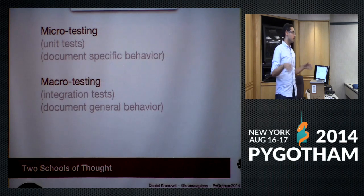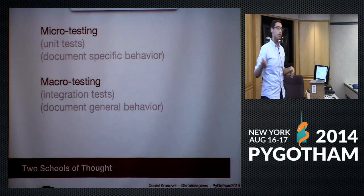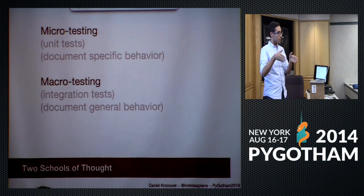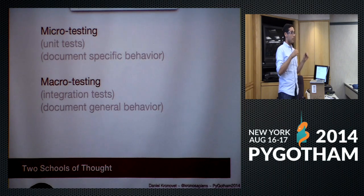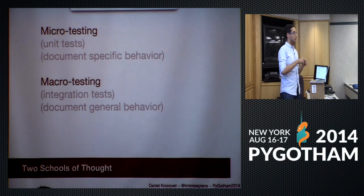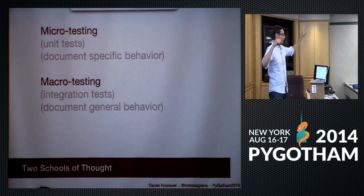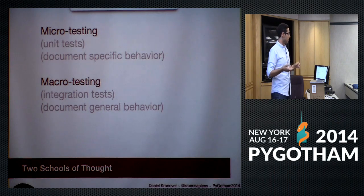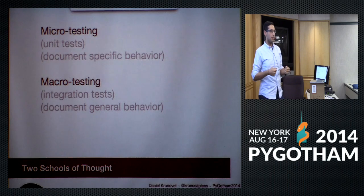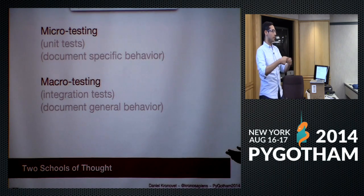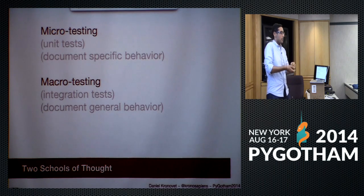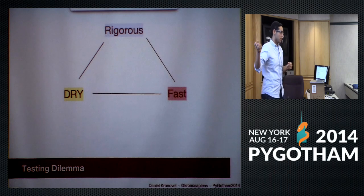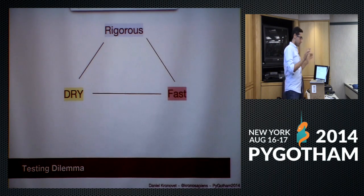There are two philosophies of testing. Unit testing (micro testing) tests every individual function or method — you document everything thoroughly, but it's slower and harder to change since modifying a function may require changing all its tests. The second is integration testing (macro testing), where you test the system at a higher level: give one input, test the final output. The advantage is you can change internal implementation without breaking the tests, as long as the macro tests keep passing.